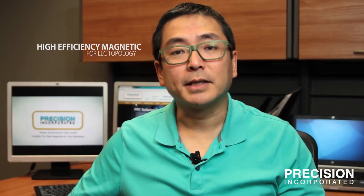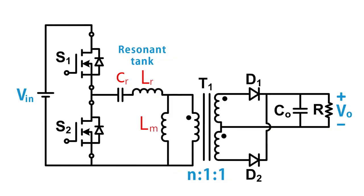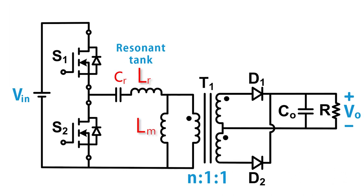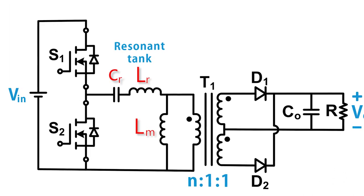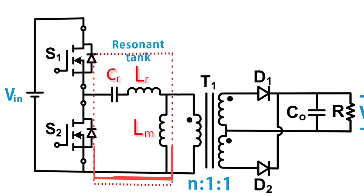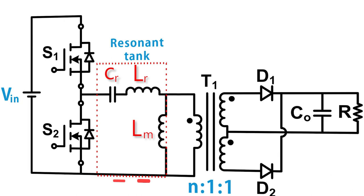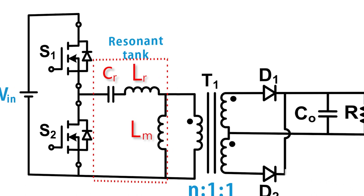LLC topology can be characterized by the two inductances, represented by the two L's in LLC. In LLC topologies, the additional inductance is needed to achieve soft switching in order to minimize switching losses.